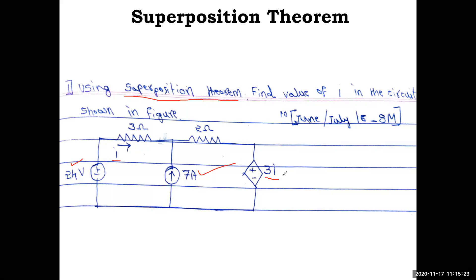Superposition is a cause-and-effect principle. There are two excitations: 24 volt and 7 amps, and the response is the current i. To apply superposition, keep one source active and deactivate the other. To deactivate a current source, open-circuit the terminals — that branch is removed — and call the resulting response i1. In the second case, activate the 7 amp current source and deactivate the voltage source by reducing 24 volt to zero, which is a short circuit, giving current i2.